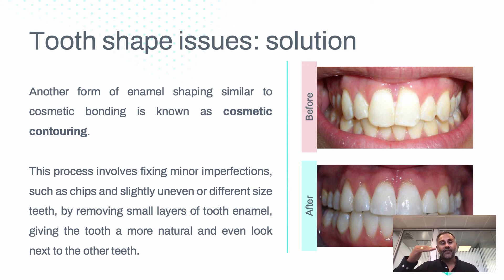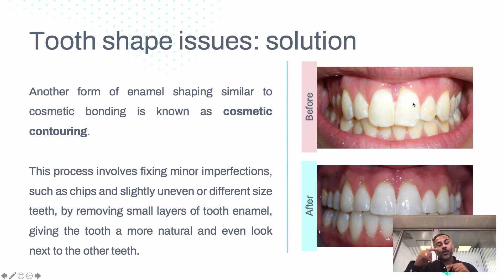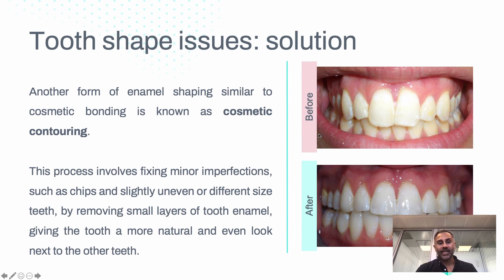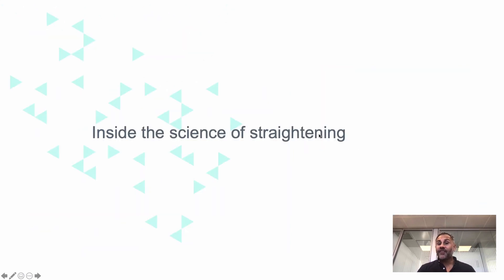Another solution apart from adding material is removing a part, which is contouring — or enamel shaping. This involves polishing minor edges. For example, these front teeth are slightly longer but the lateral incisors are very short, so the disproportion creates a big difference. Contouring has been done here to harmonize the edges and make things more even. Hopefully this helps you understand that there's more to improving your smile than just the position of the teeth.